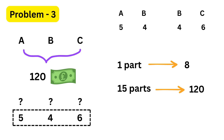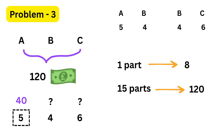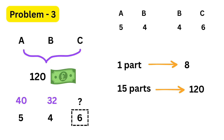Now let's find how much each person gets. A has five parts, so A gets five times eight, which equals forty pounds. B has four parts, so B gets four times eight, which equals thirty-two pounds. And C has six parts, so C gets six times eight, which equals forty-eight pounds. Amazing!